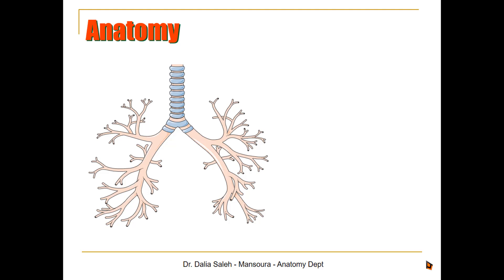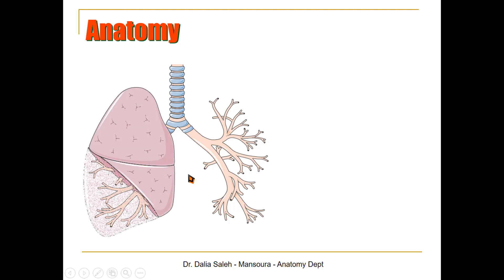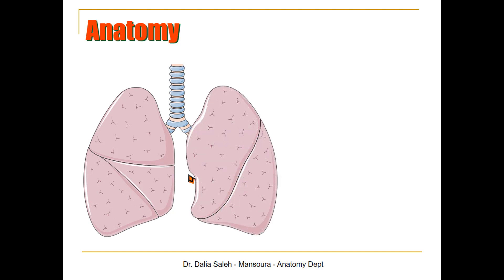Let's start first with the anatomy of the respiratory system. In the bronchial tree, we can see the trachea and its division into two main or primary bronchi — right bronchus and left bronchus. Then each bronchus divides into secondary bronchi or lobar bronchi. On the right side, we have three lobar bronchi: upper, middle, and lower. While on the left, we have only two lobar bronchi: upper and lower. That's why the right lung has three lobes and the left lung has only two lobes.